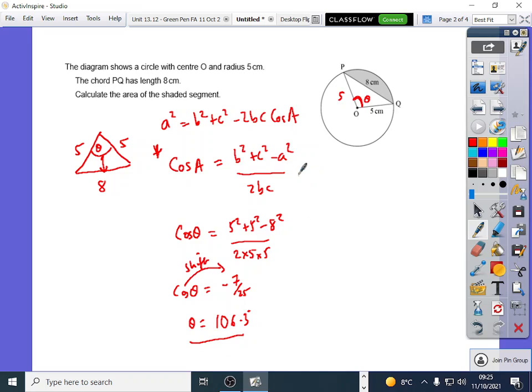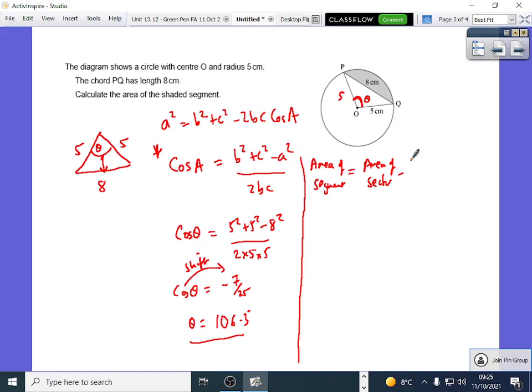I'm going to put a line down here, because we've done the hardest bit, to be honest with you. That's the toughest bit, is finding that angle. This is the easy bit. To find area of segment, the formula is area of segment equals area of sector subtract area of this triangle.